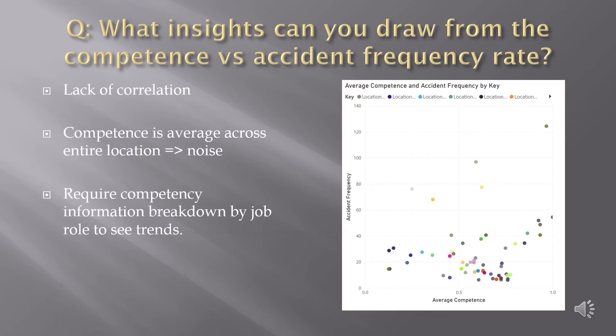On this challenge we do have data on training competence, but it has not been used extensively because there isn't a clear correlation between competency and accident rate. The company data we have is the average across entire locations across multiple disciplines, which can create noise. To hone in on the issue, it would be useful to see the training level of the individuals involved in each accident.